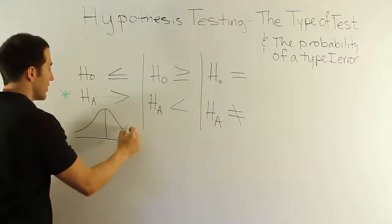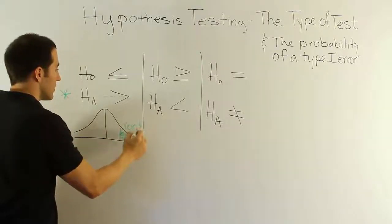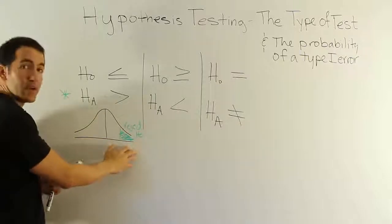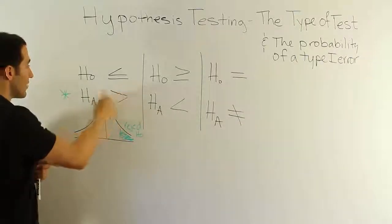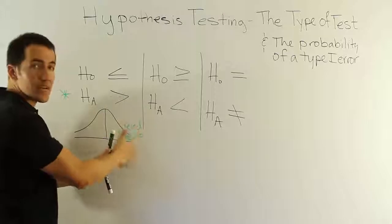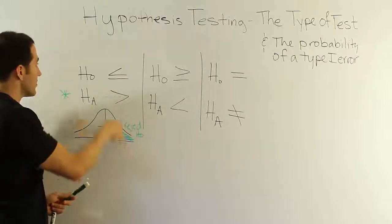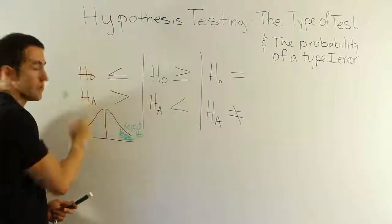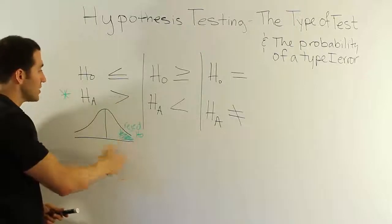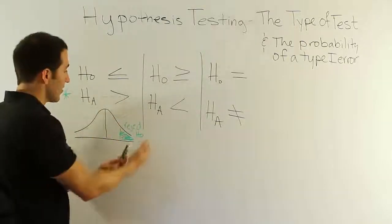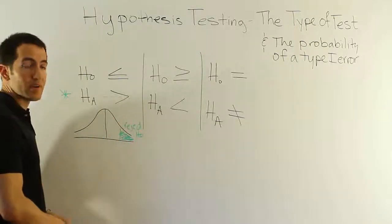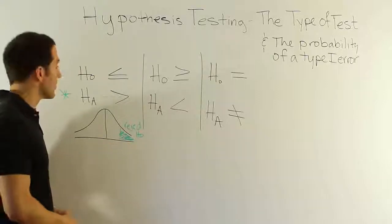So that means our rejection region is going to be here. The reason why I would say we reject H0 here is because if it's greater than for HA, then the large data of that sample data is going to cause us to contradict this less than or equal to statement here. To reject H0 whenever the data indicates that we have a mean that's higher than we expect, a sample mean higher than we expect.